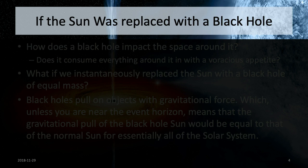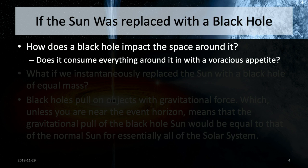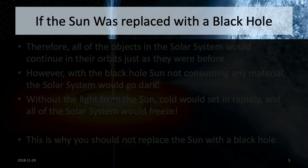Let's take a look at where we are here in the solar system. One question often thought of is: what would happen if you actually replaced the sun with a black hole? A common thought is that black holes will completely consume everything around them — they're a voracious vacuum that sucks in everything. But let's instantaneously replace the sun with a black hole of equal mass and see what actually happens.